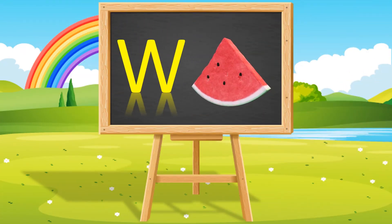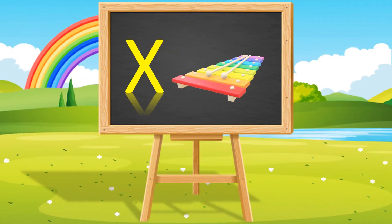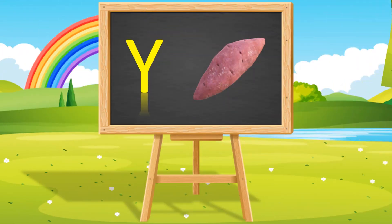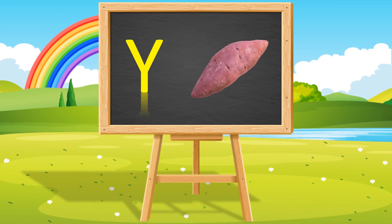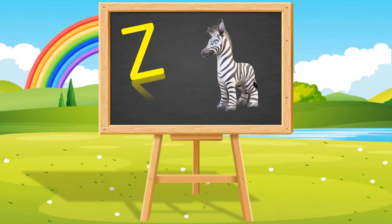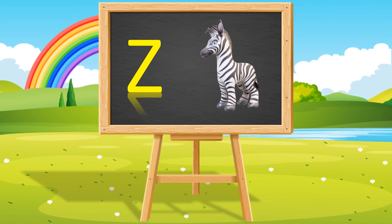W for watermelon. X for xylophone. Y for yam. Z for zebra.